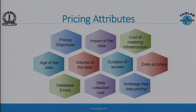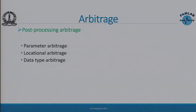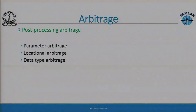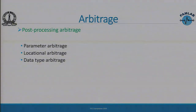Arbitrage-free pricing is important: if someone can get the answer to a query using less money, that is called arbitrage. One subtype is post-processing arbitrage — suppose the answer to one query is costly and another is cheaper, but you can use the answer to the cheaper query to deduce the answer to the costly query. For smart grids we have identified three such possibilities: parameter arbitrage, locational arbitrage, and data type arbitrage.